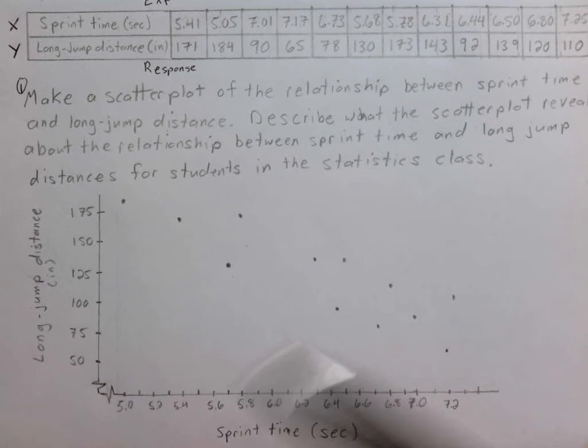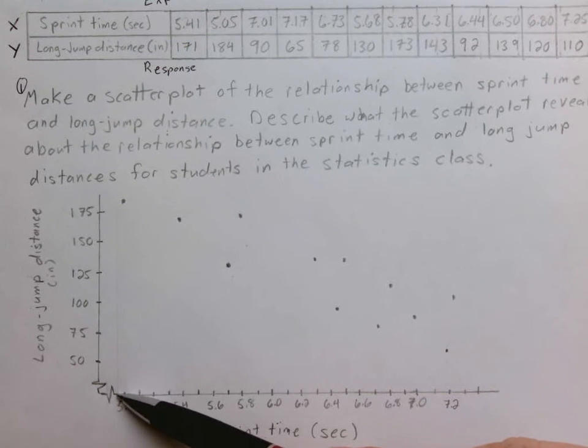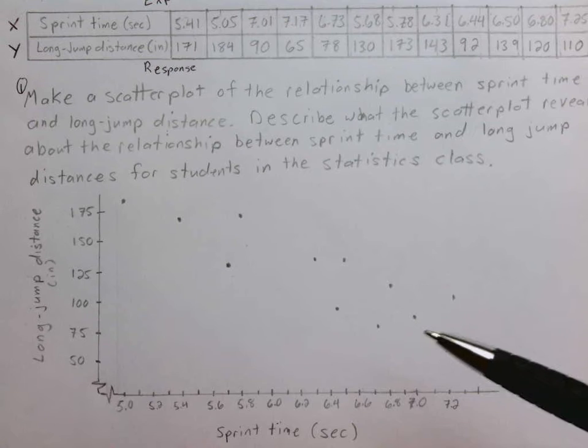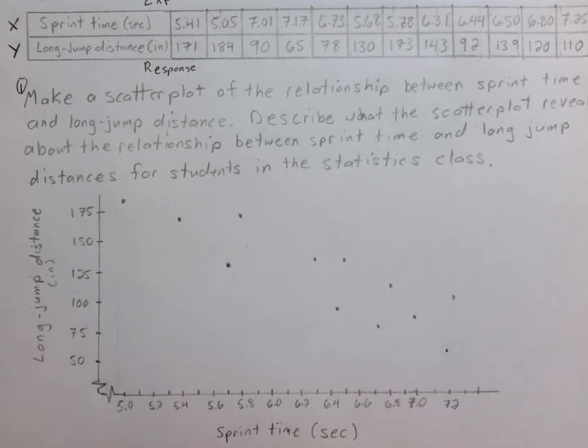One other feature of the graph that might be of interest is this little squiggle that represents a break. Because we're not starting at 0,0, it's a good idea to include a break to represent that a lot of information here we skipped over that we didn't think was necessary to include in our graph, but it should be there in general.